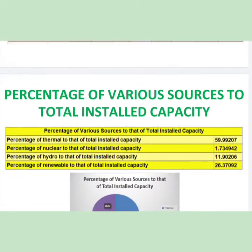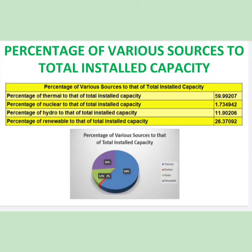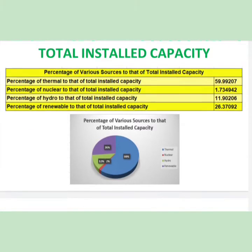If you look at it another way — the percentage of various sources to total installed capacity — the contribution of thermal is 59.9%, nuclear is 1.73%, hydro is 11.9%, and a very promising figure of 26.37% is given by renewable sources to the total contribution. The same is depicted by the pie chart.